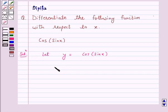Therefore dy by dx is equal to d/dx of cos of sin x. Now here we will apply the chain rule.